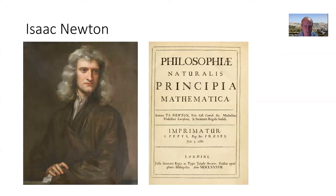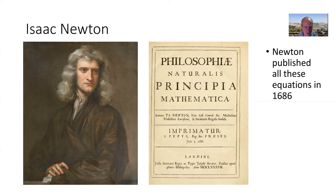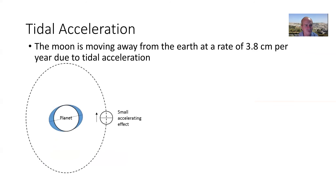Those equations were all figured out by Isaac Newton back in 1686. So let's talk about tidal acceleration. This is a very interesting force, and one which some creation scientists have latched onto. It's that the moon is moving away from the Earth at a rate of 3.8 centimeters per year due to tidal acceleration.